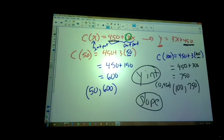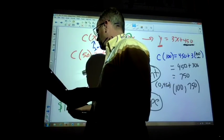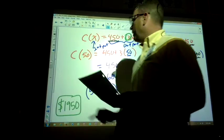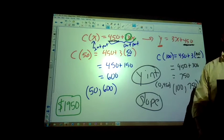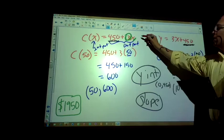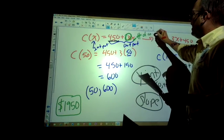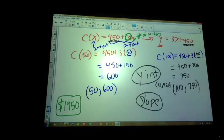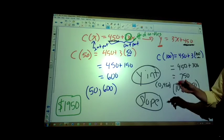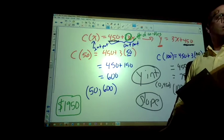Number four says determine the number of candles produced if the total cost was $1,950. We have this $1,950. What am I trying to figure out? X is the number of candles. If you had at the end of the day $1,950, would I plug it in for X? You'd plug it in for C. C(x). So it gets plugged in for the whole thing.